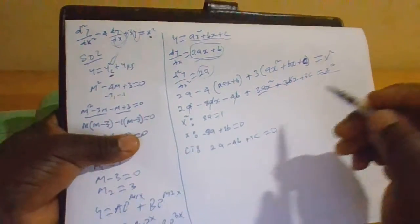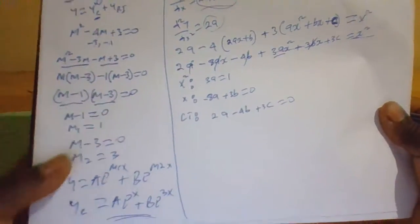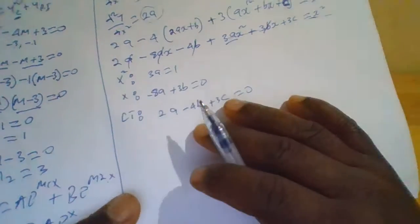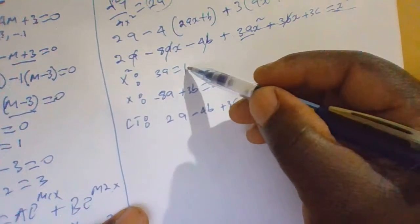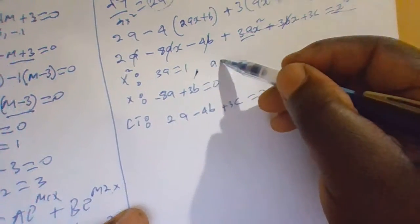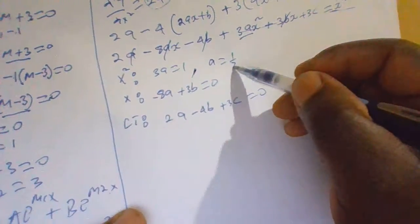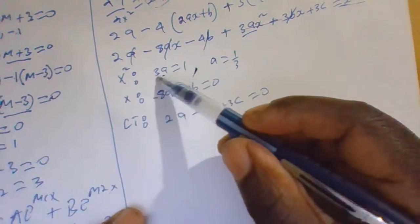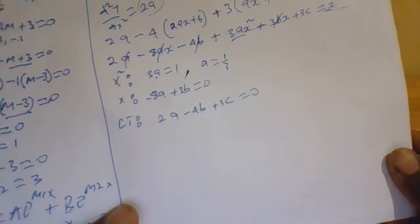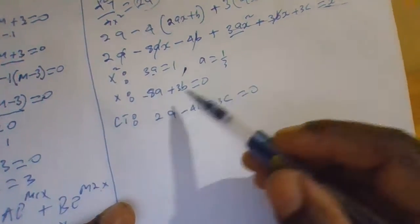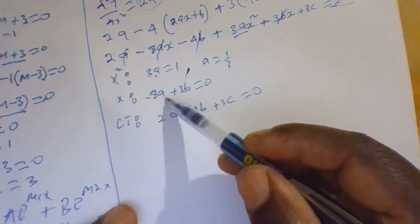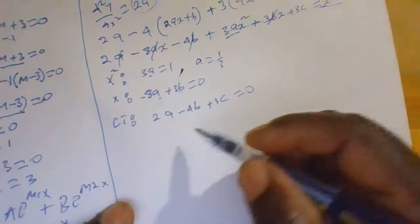From the x squared equation, dividing both sides by 3, we get a equals 1 over 3. We can now substitute this value of a to find b.